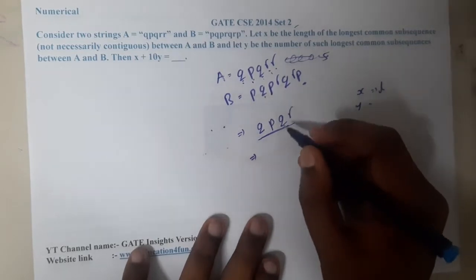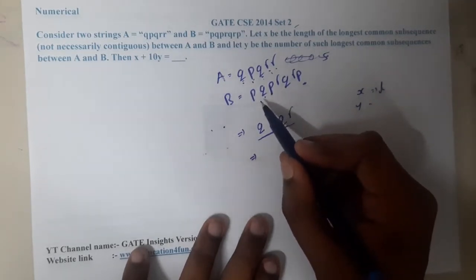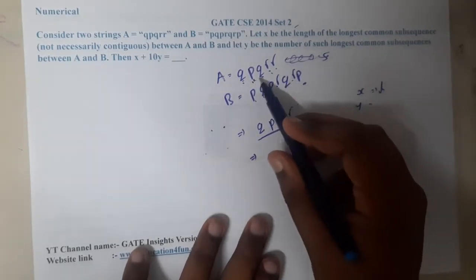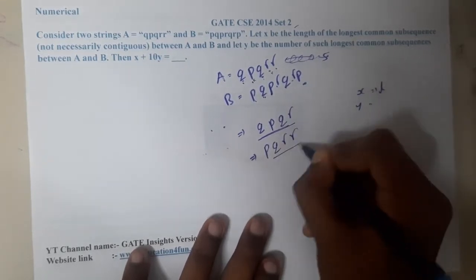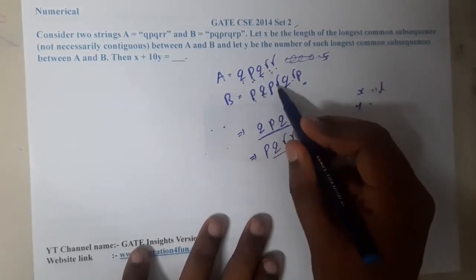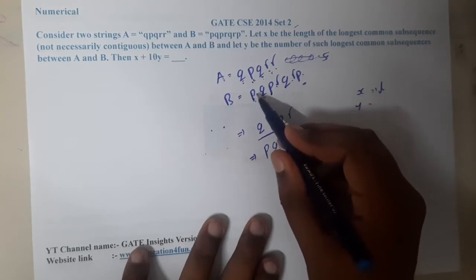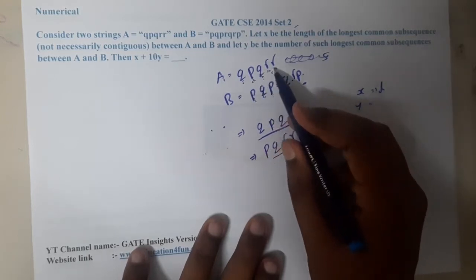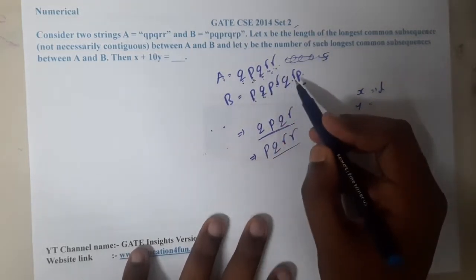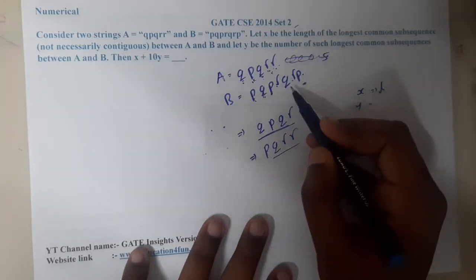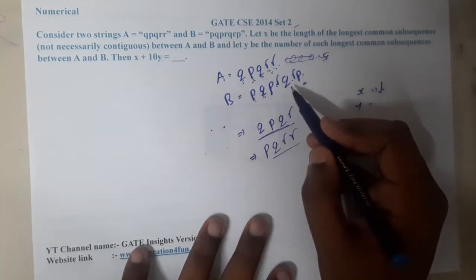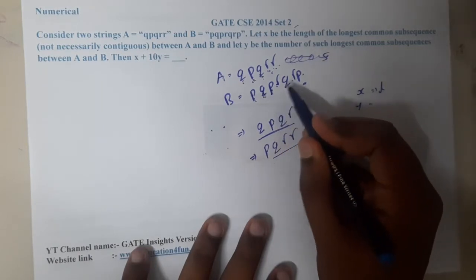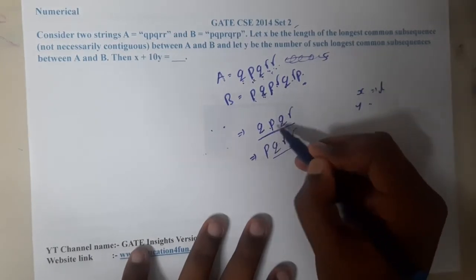Similarly, let's try to find other patterns. One pattern is p q r r which matches here. It might be in this way: p q r r. And I think there's one more sequence: q p q r. So this is also there.